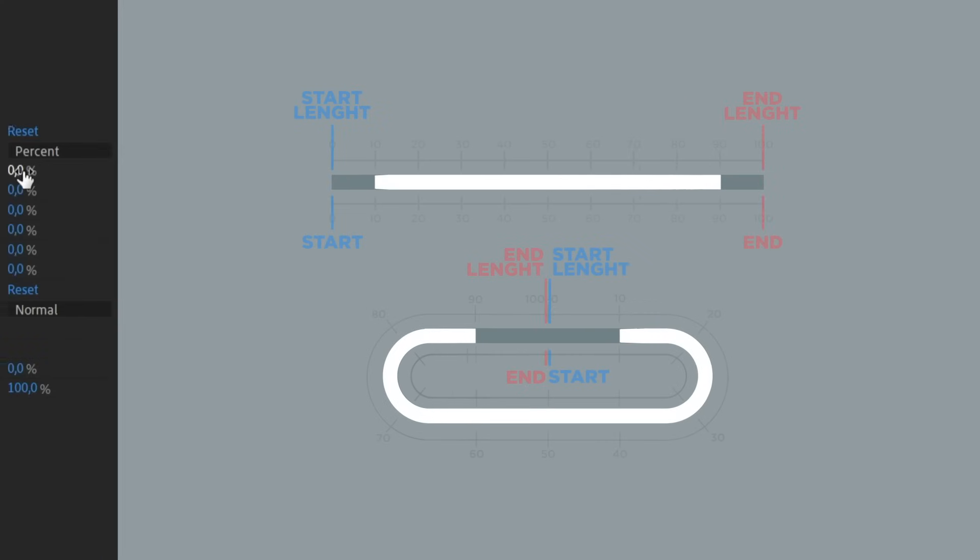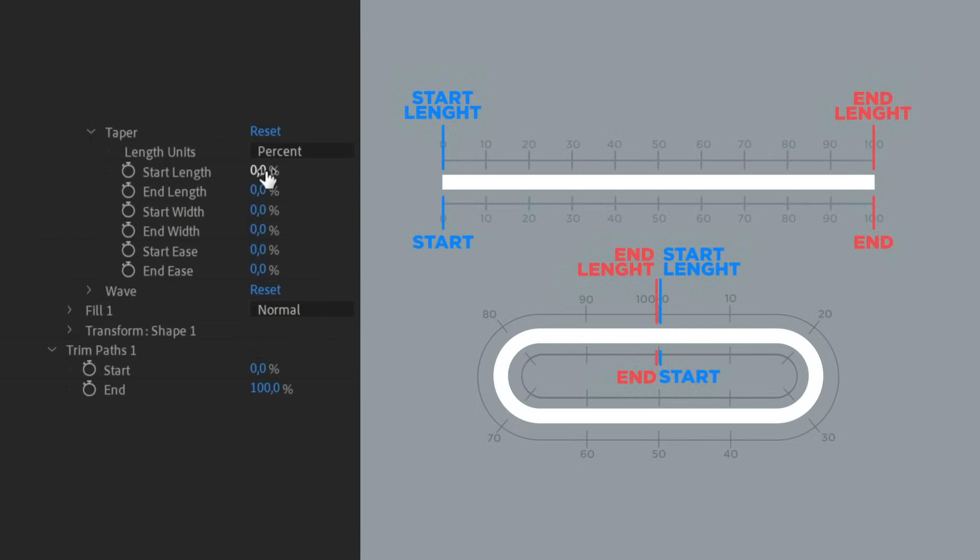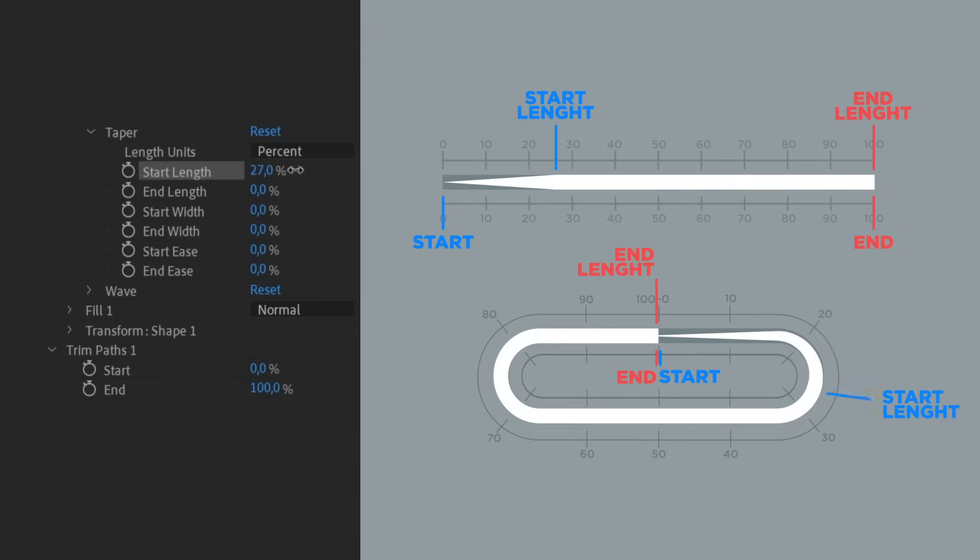Taper is a function that allows you to introduce width variation to your stroke. Using the same setting as before, the taper works by keeping your stroke width as the widest base and you can only decrease from that. The first two values, start length and end length, determine how your thickness increases and decreases based on the length percentage.